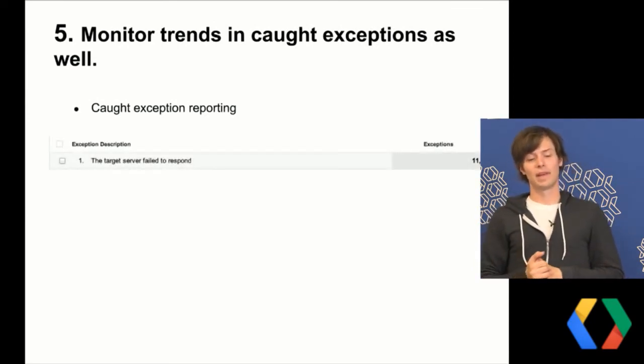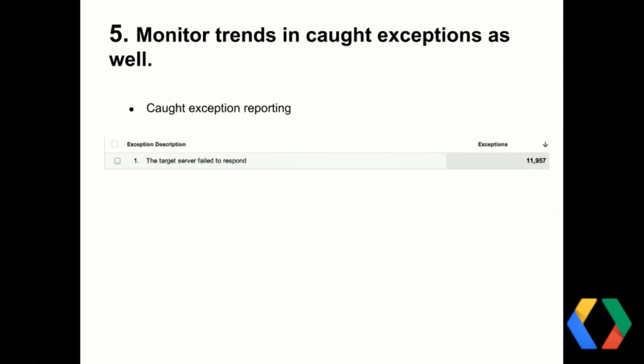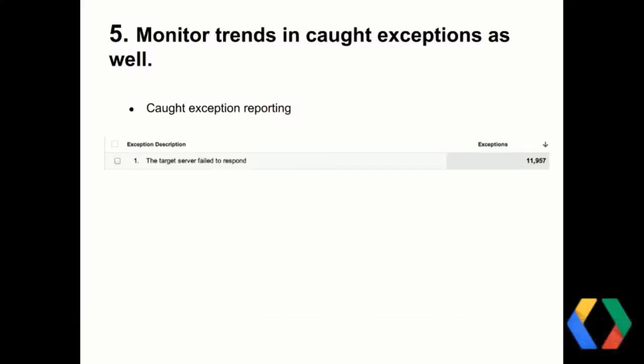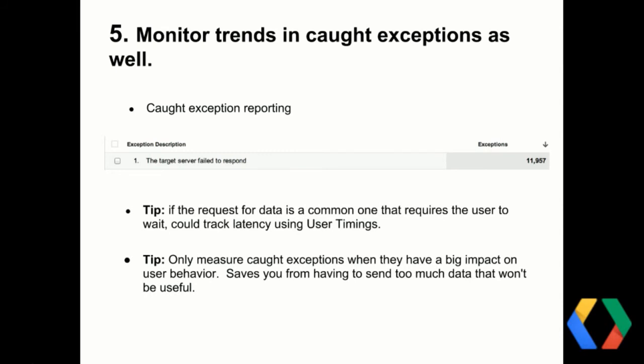On the reporting side, what that might look like is a caught exception showing up repeatedly when the server is failing to respond — users were asking for data, sitting there waiting, and the data was not being returned. That's what it looks like in your reports. In cases where users are waiting for data from the cloud and their experience is stuck, that's also a good use case for the user timings feature — probably a whole different GDL, but worth mentioning.